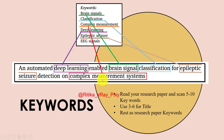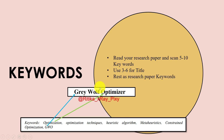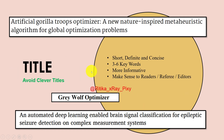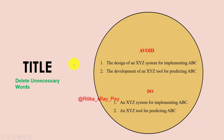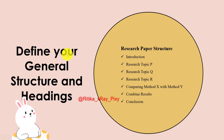When writing the research paper title, avoid clever titles — the title should relate directly to what you have done in the research paper. It should be short and concise, containing three to six words, more informative, and make immediate sense to the readers. Delete unnecessary words from the title.